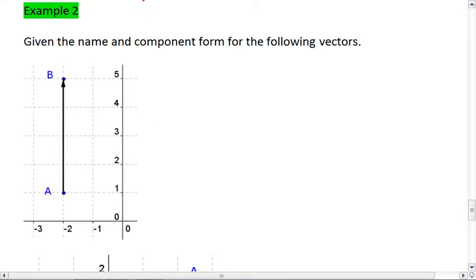All right, for here, we start at A and go up to B. So our vector's name is AB. We see that we do not go any distance to the right or the left, but we do go four units up. Thus, my vector component is ⟨0, 4⟩.